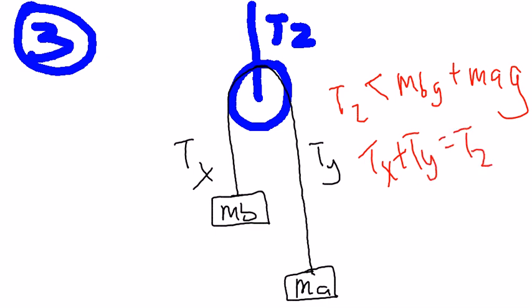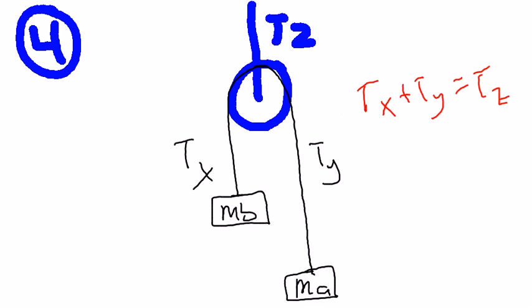Tx is less than mass B times gravity and Ty is greater than mass A times gravity. Therefore, Tz is less than MBG plus MAG. For question 4, Tx plus Ty equals Tz.